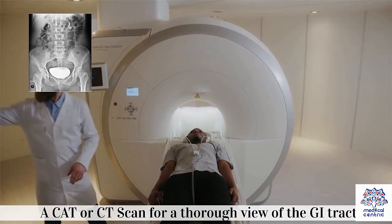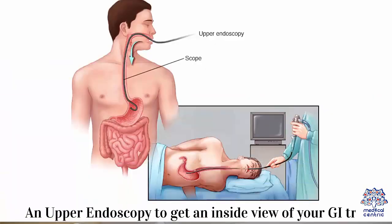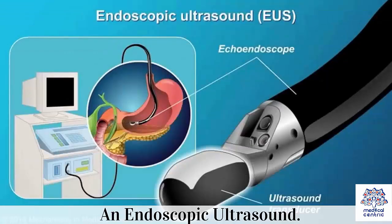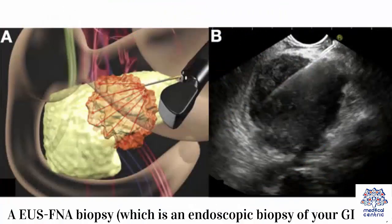An MRI of your GI tract. An upper endoscopy to get an inside view of your GI tract. An endoscopic ultrasound. An EUS FNA biopsy, which is an endoscopic biopsy of your GI tract.